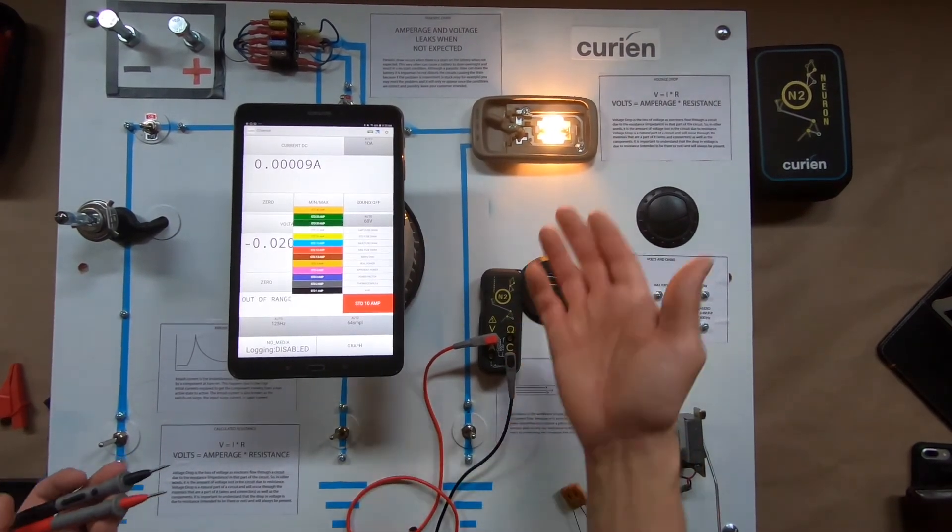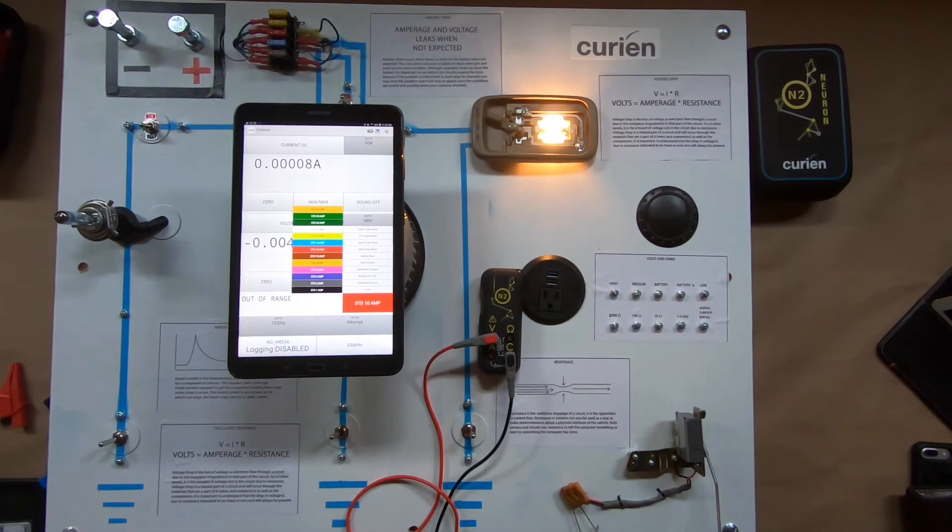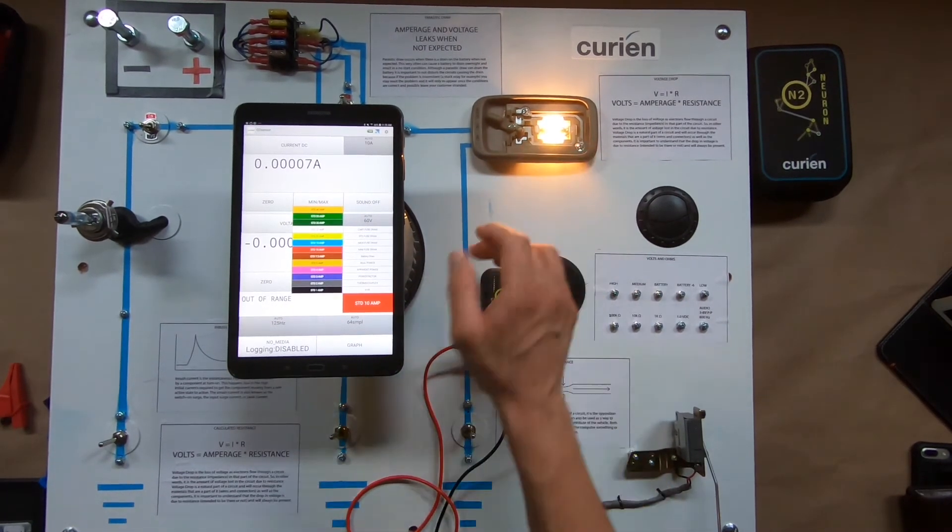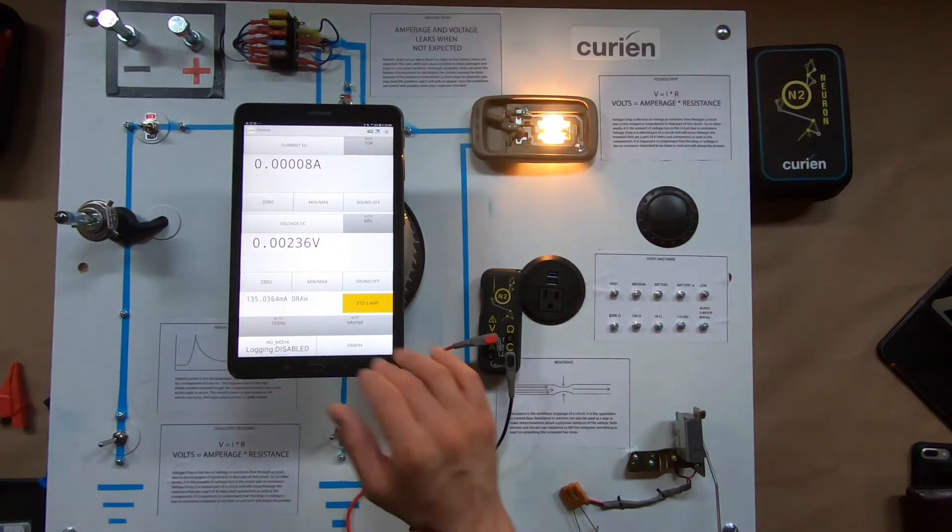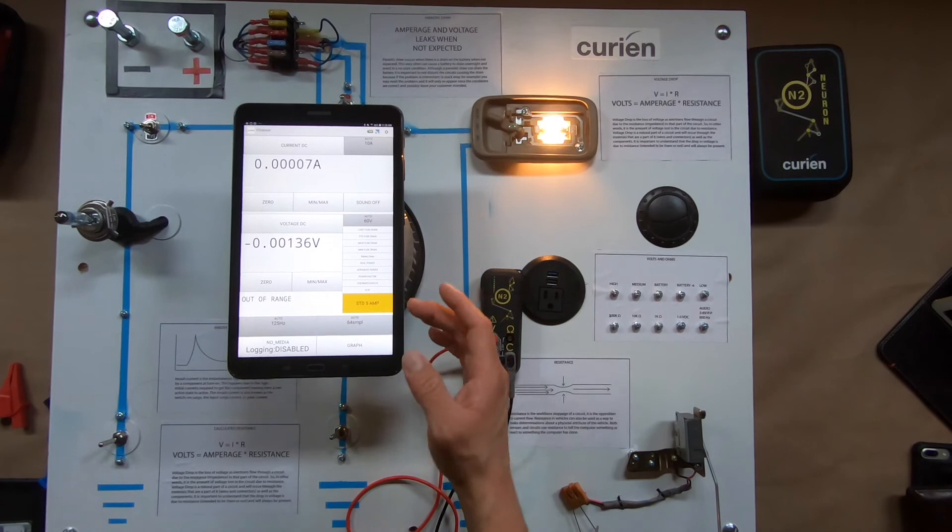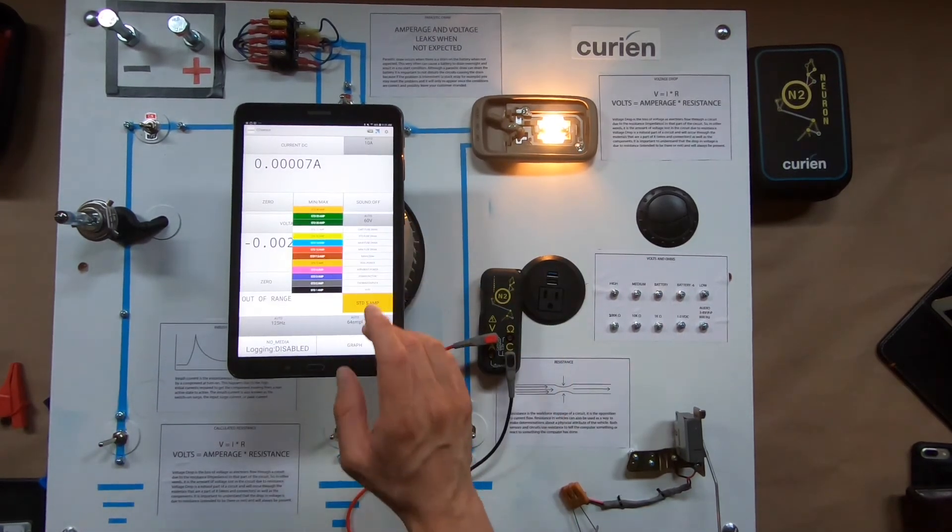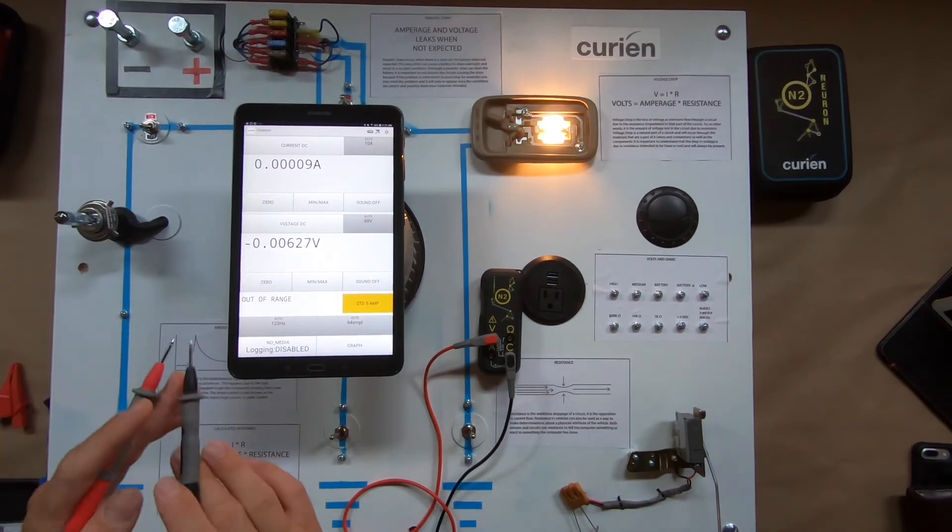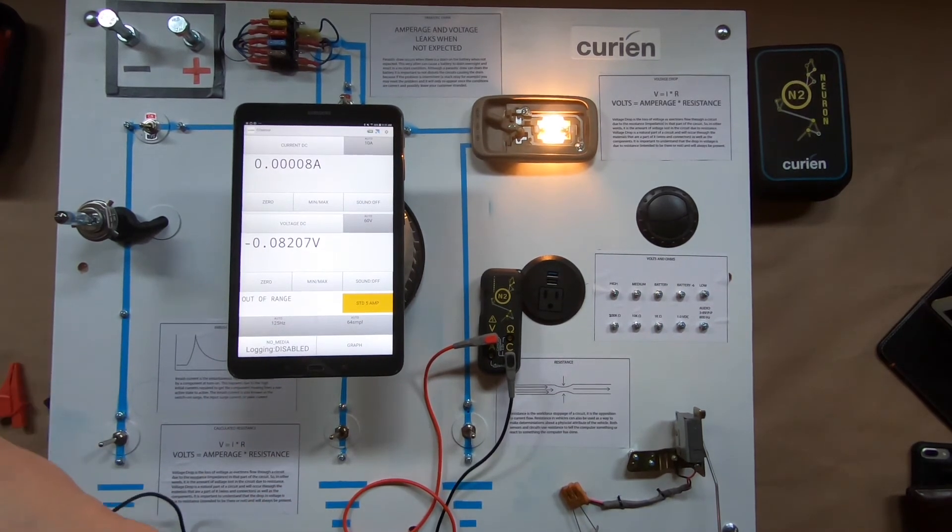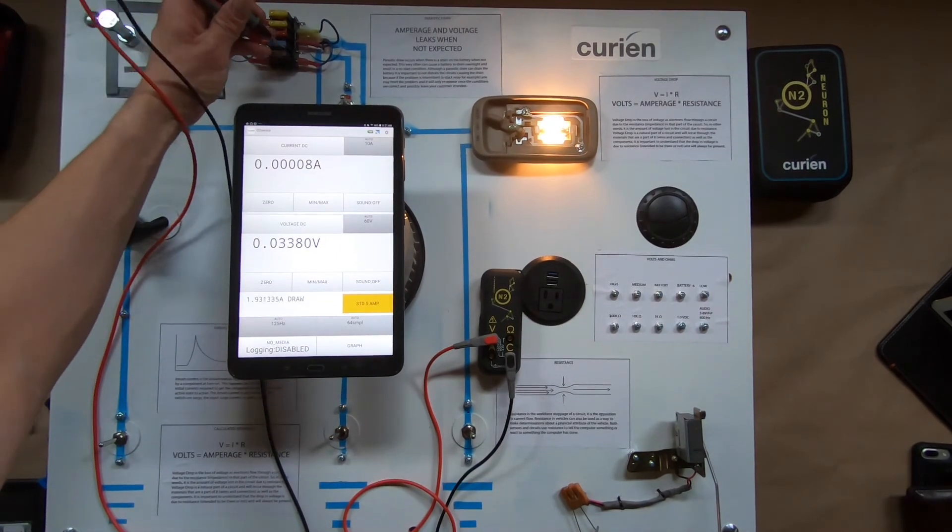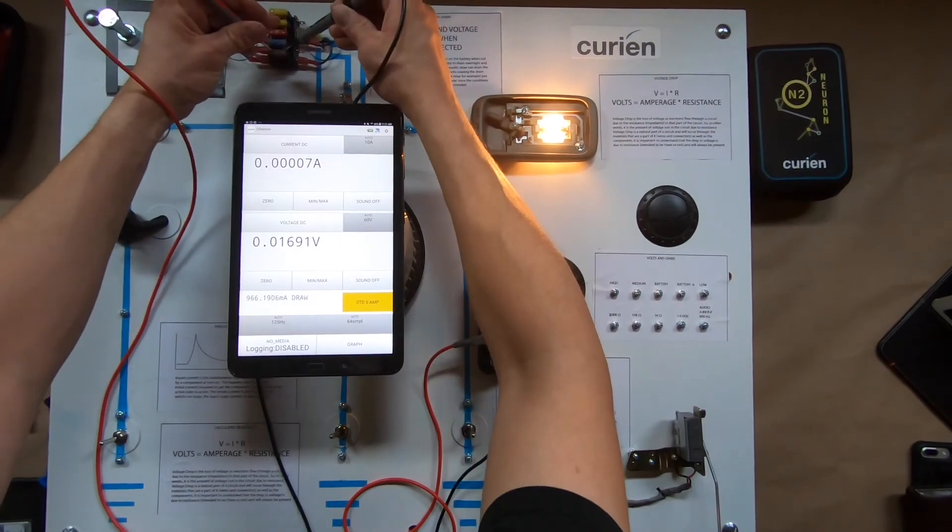So right now this fuse, or this circuit, is going through a 5 amp standard fuse. So all we would do is go into our interpretations here, hit standard fuse, 5 amps, and there we go. Now in doing a voltage drop across the fuses, or a parasitic draw test, I'm going to take positive to the most positive side. Sorry, I'm going to move my arm here in a second. Negative to the other side.